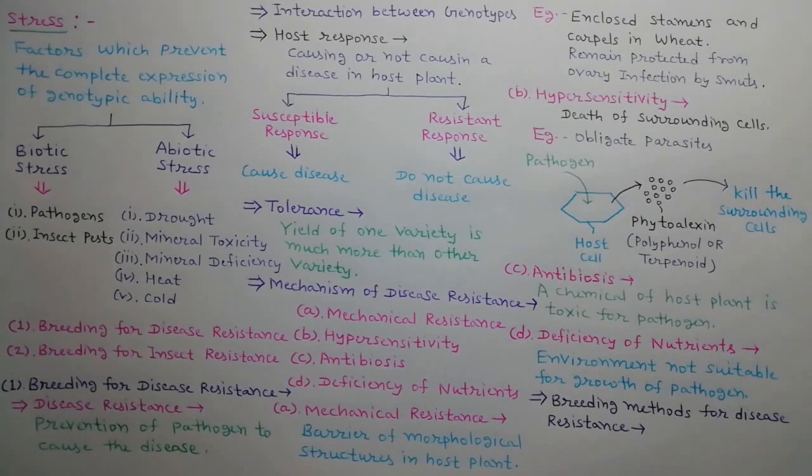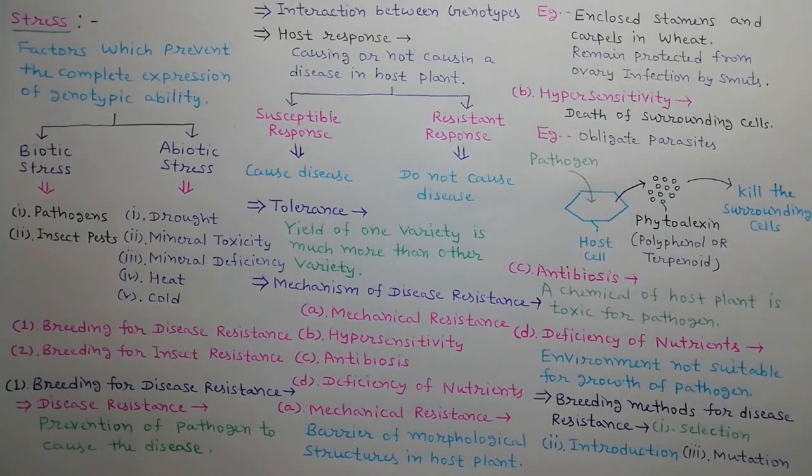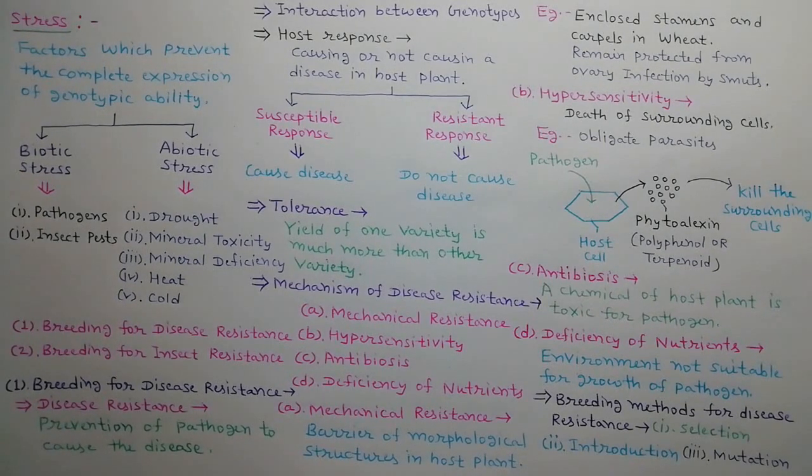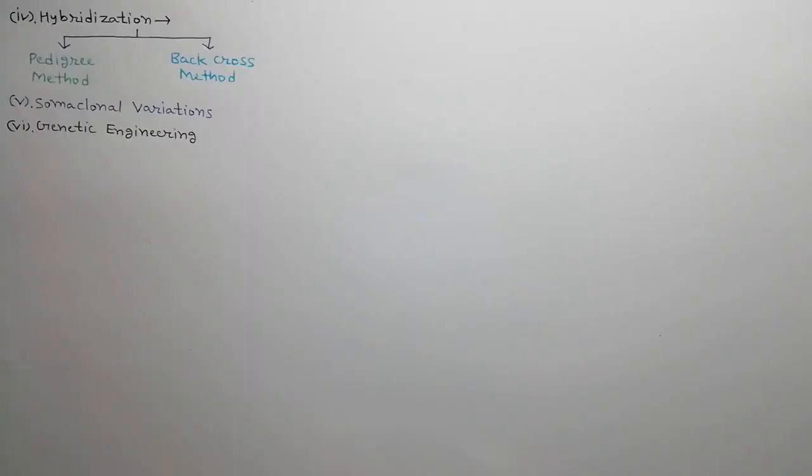We can use various breeding methods for disease resistance such as selection, introduction, mutation, hybridization in which pedigree and backcross methods are used, somaclonal variations, and genetic engineering.